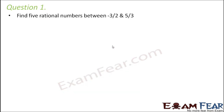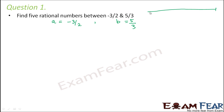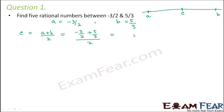Find 5 rational numbers between -3/2 and 5/3. Here A equals -3/2 and B equals 5/3. First, find C, the mean of A and B: C = (A + B)/2 = (-3/2 + 5/3) / 2 = (-9 + 10) / 6 / 2 = 1/12. So 1/12 is one such rational number.